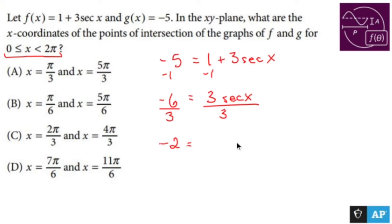Negative 2 equals secant x. Look at all that space that I made. Now, why did I make so much space? Well, I'm going to inverse secant both sides.